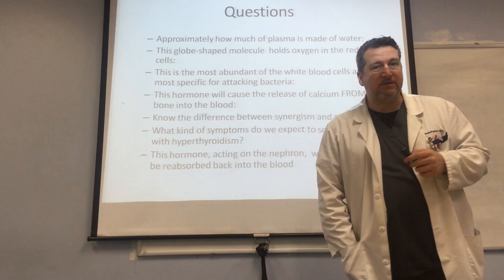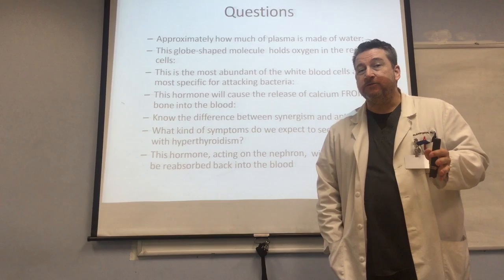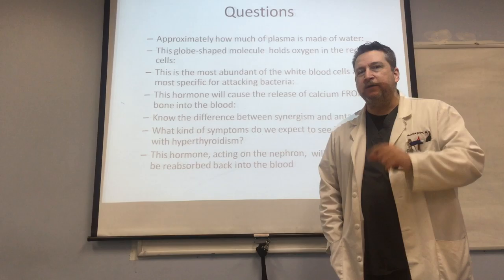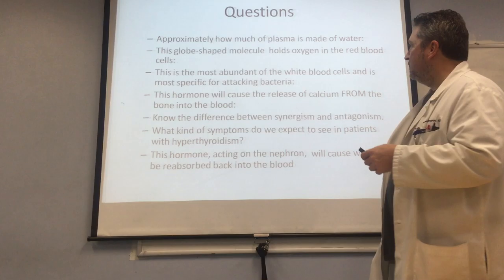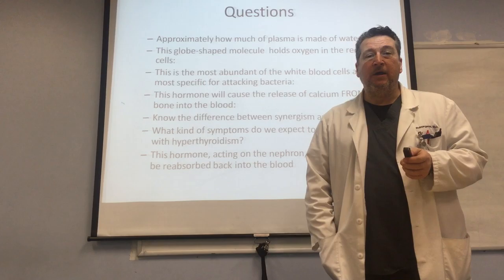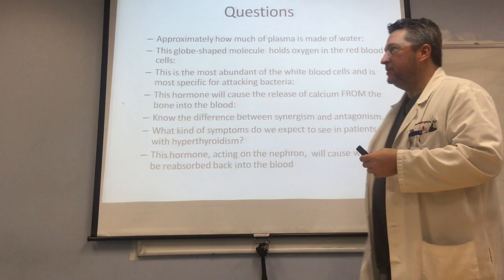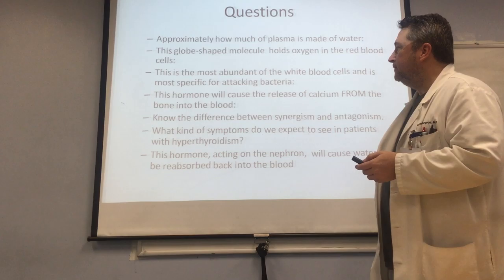The most abundant of the white blood cells that specifically attacks bacteria — this white blood cell makes up about 65% of all the white blood cells in the body, and although it can gobble up a lot of different things, it is most specific for destroying bacteria. The hormone that causes the release of calcium from the bone into the blood — we talked about this in the endocrine system — is going to utilize osteoclasts to break that bone down and release the calcium into the blood.